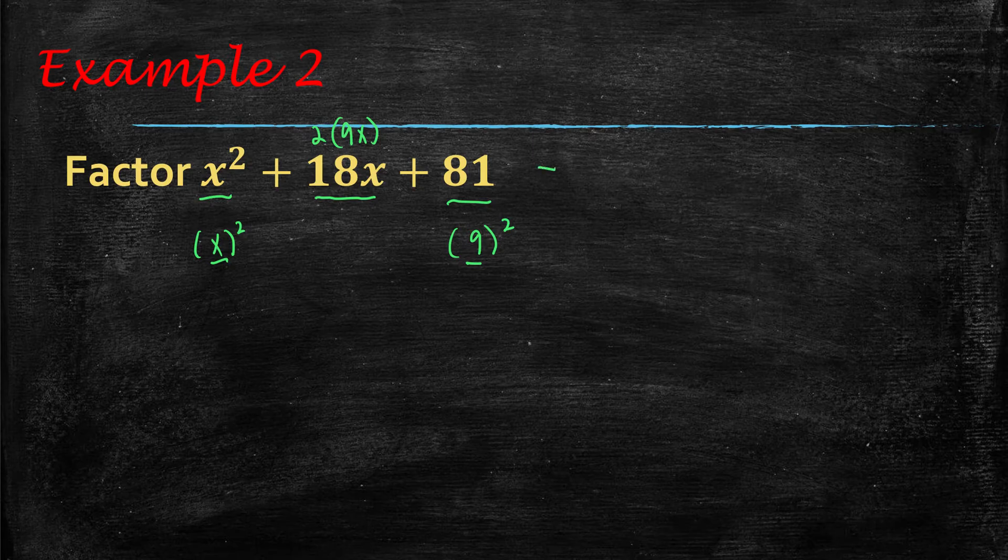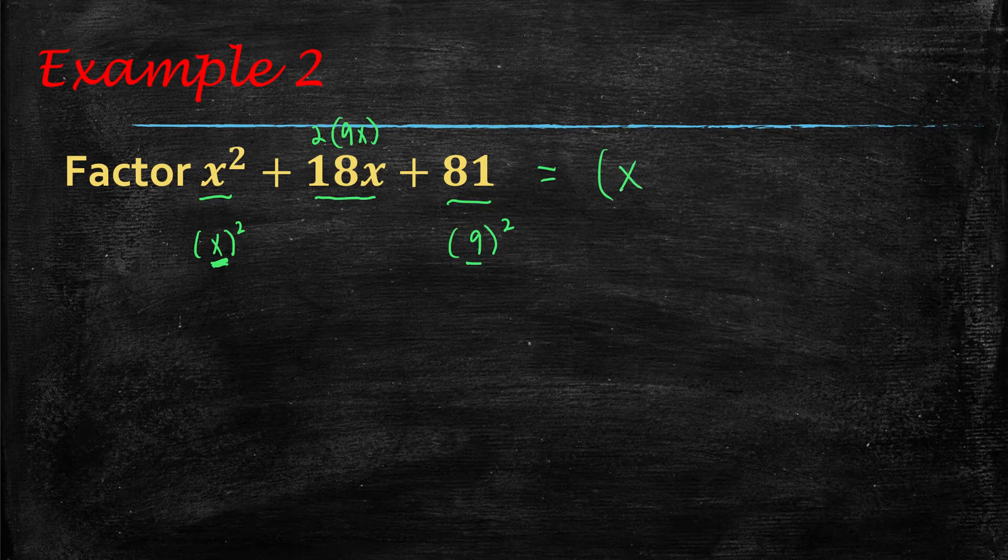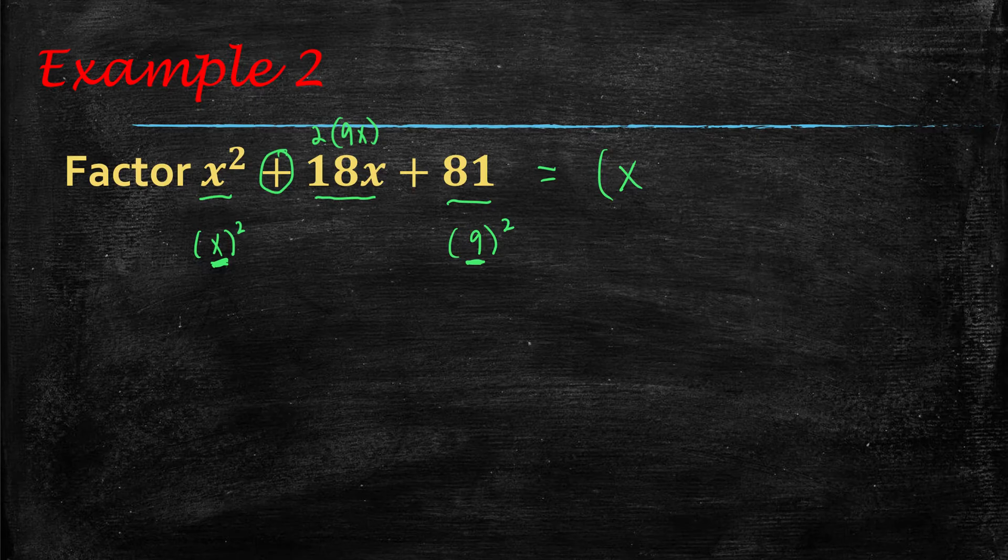So this would factor to be this a value right here, which is x plus, notice I'm using a plus because the middle term is plus, and then it is quantity squared.